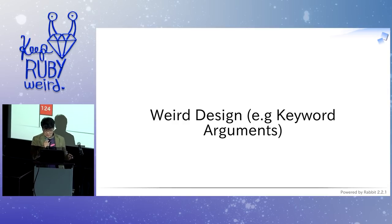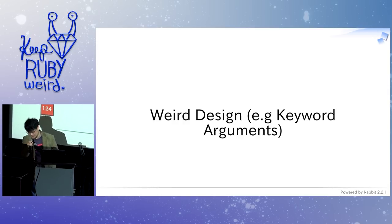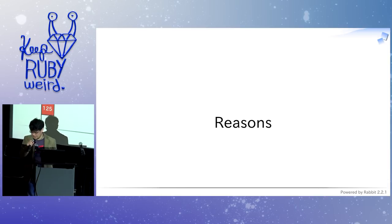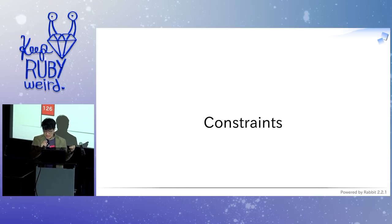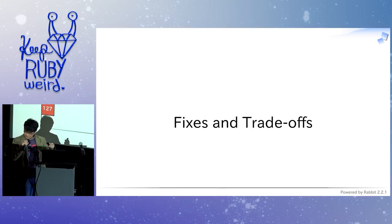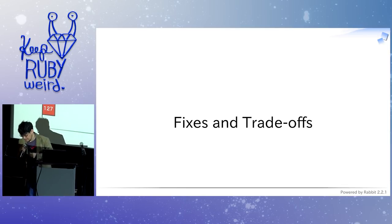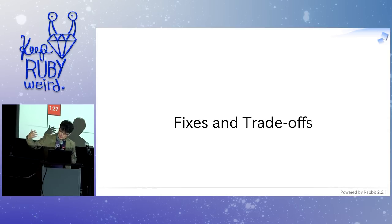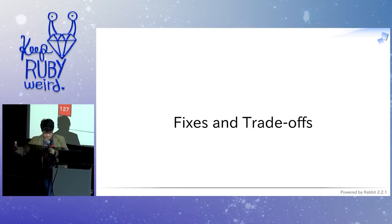We have weird design in our language, and in our applications or libraries. For example, we have weird keyword arguments, but there are reasons — constraints, restrictions, historical reasons. You can fix them, but we have trade-offs. We can easily fix them by punishing users, or we can fix them by providing some kind of migration path to the future version.